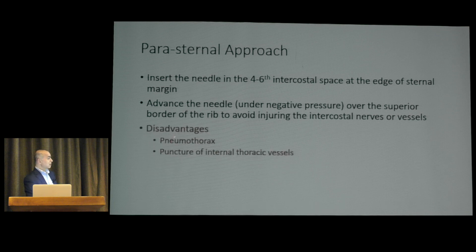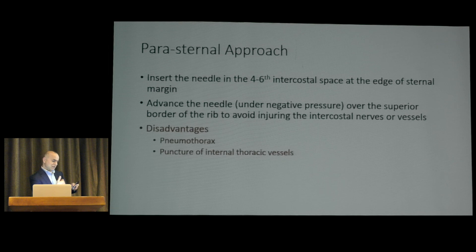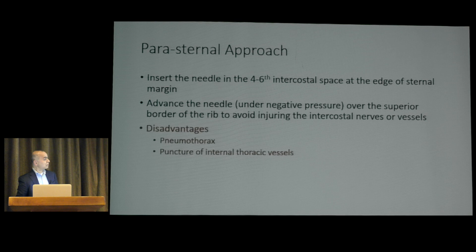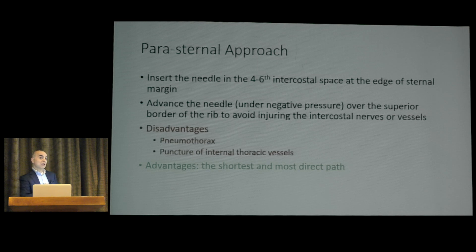Disadvantages of the parasternal approach include risk of pneumothorax and puncture of the internal thoracic vessels if you go more than one to two centimeters lateral — beyond that you may enter the mammary or thoracic artery. So you must puncture very close to the sternal margin. Advantages: it is the shortest and most direct pathway, just perpendicular, and particularly useful in obese patients.